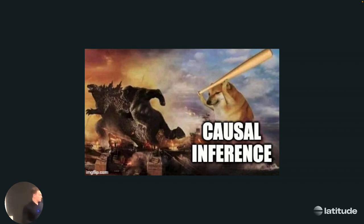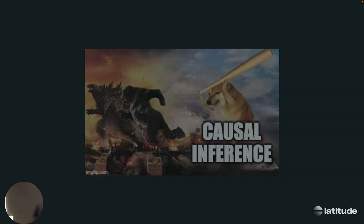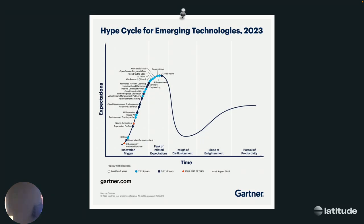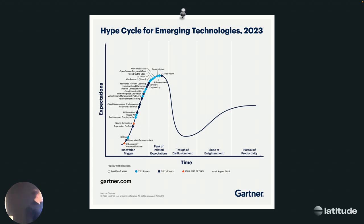That's kind of what this field is about — there are so many different techniques and it makes you think in a different way about your data. Since we're a consulting firm, we have to show a graph from Gartner. Causal AI is somewhere in the hype cycle — it's kind of slowly starting out.